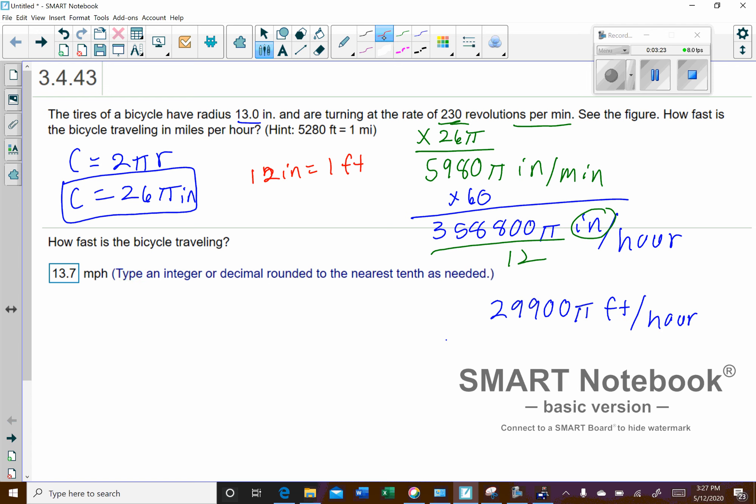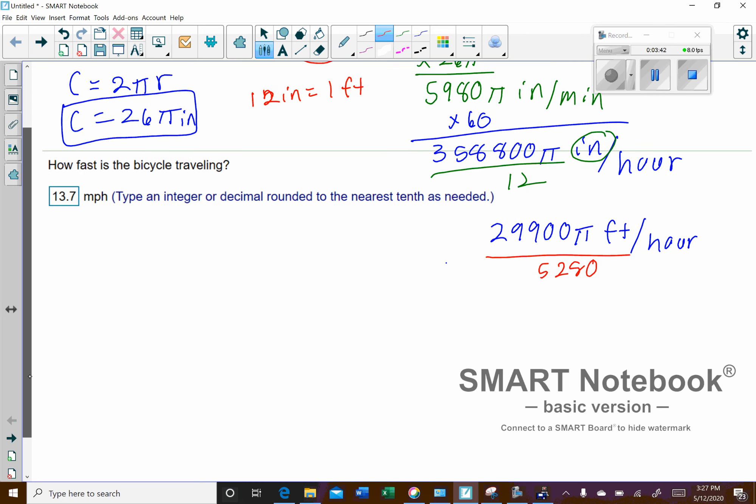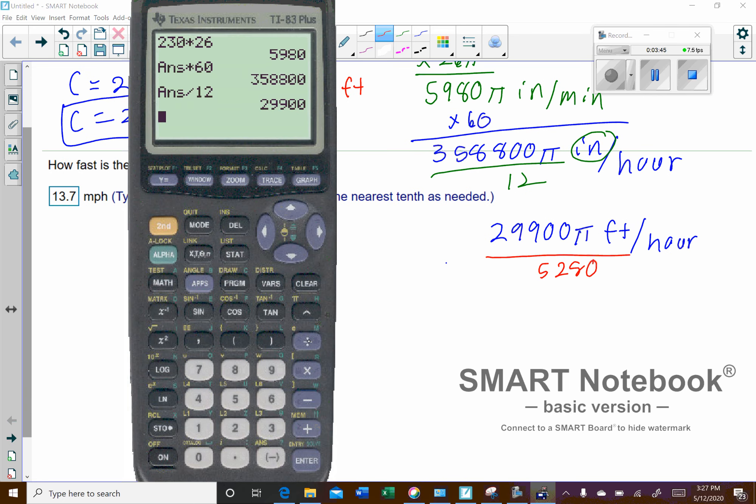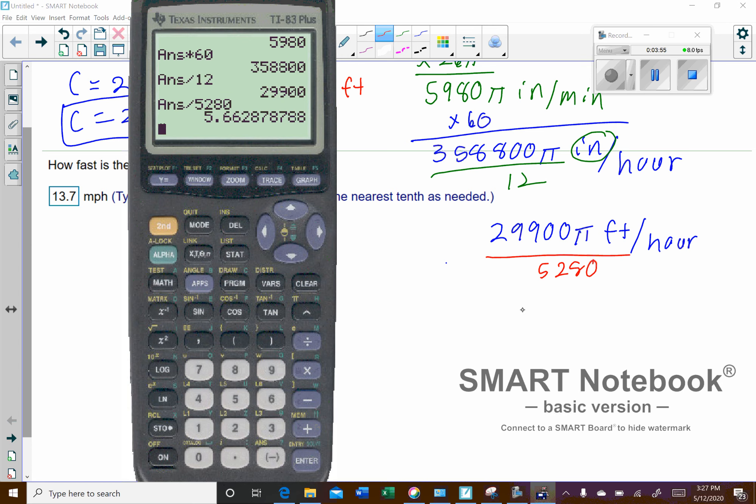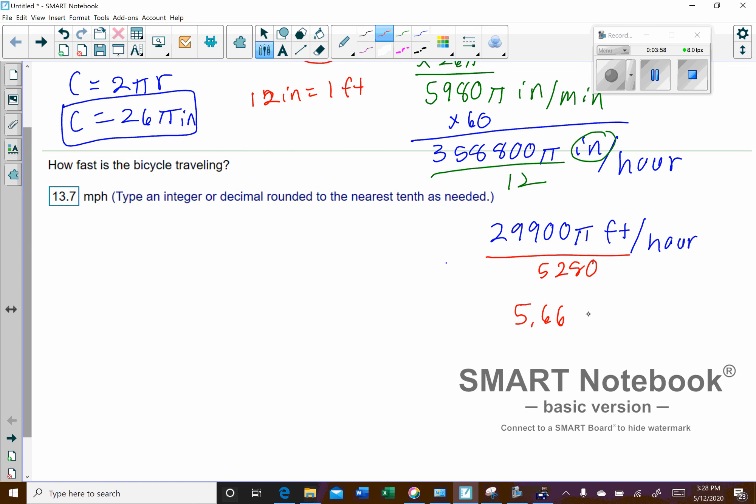And then now if we want to convert that to miles, we're going to have to divide by 5,280. Now that one, I don't think it's going to divide evenly. So let's see, divide by 5,280. And so I'm going to put 5.66287. So 5.66287π, and now we're at miles per hour.